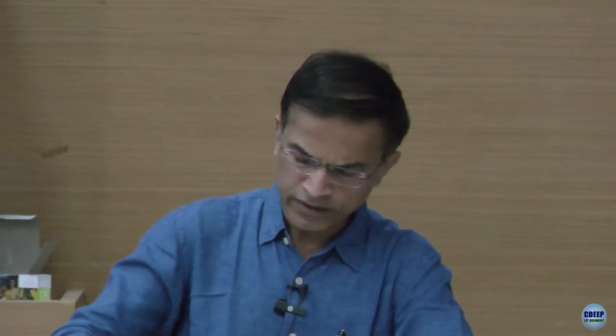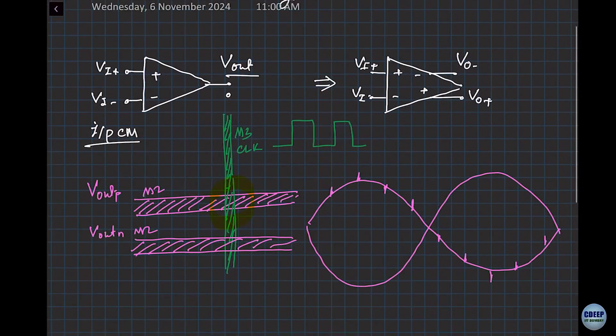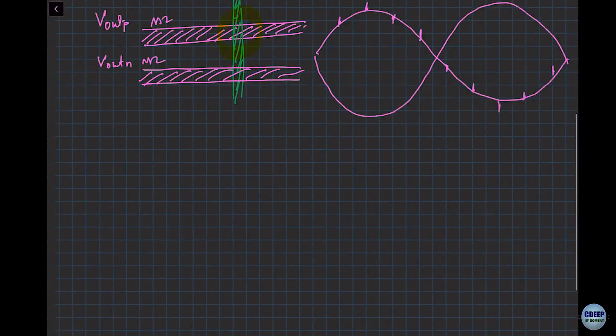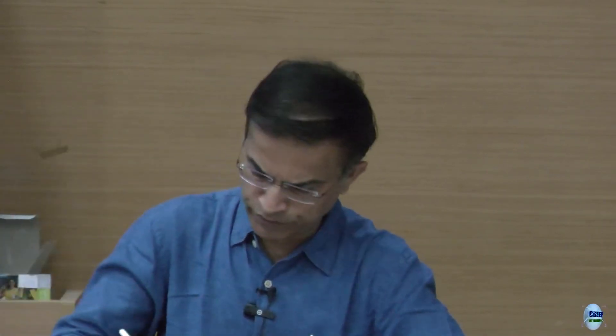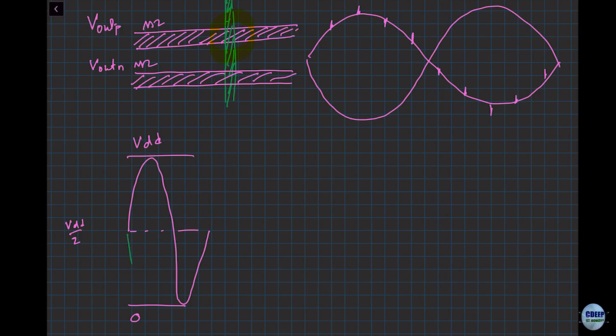Another advantage of having a differential circuit: with differential input and differential output, let's say you have a supply from zero to VDD. You want your output common mode at VDD by two for symmetrical swing. If I do a differential circuit, I have another output which is the inverted version. Since I have differential output, the swing has doubled.